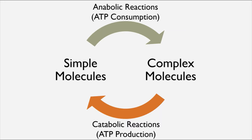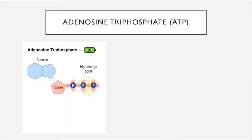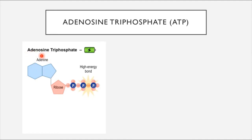ATP has a unique structure that is able to store a very high amount of energy. Its full name is adenosine triphosphate. It's called this because one component of its structure is called adenine—that's where the 'adenosine' part of the name is derived from—and you can also see a series of three phosphate groups, which is where the 'triphosphate' component of the name comes from.